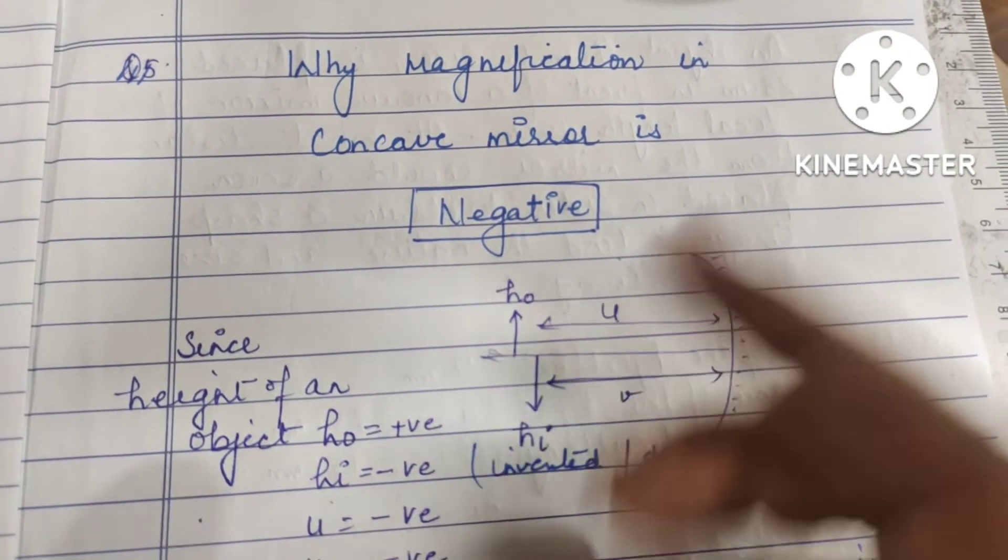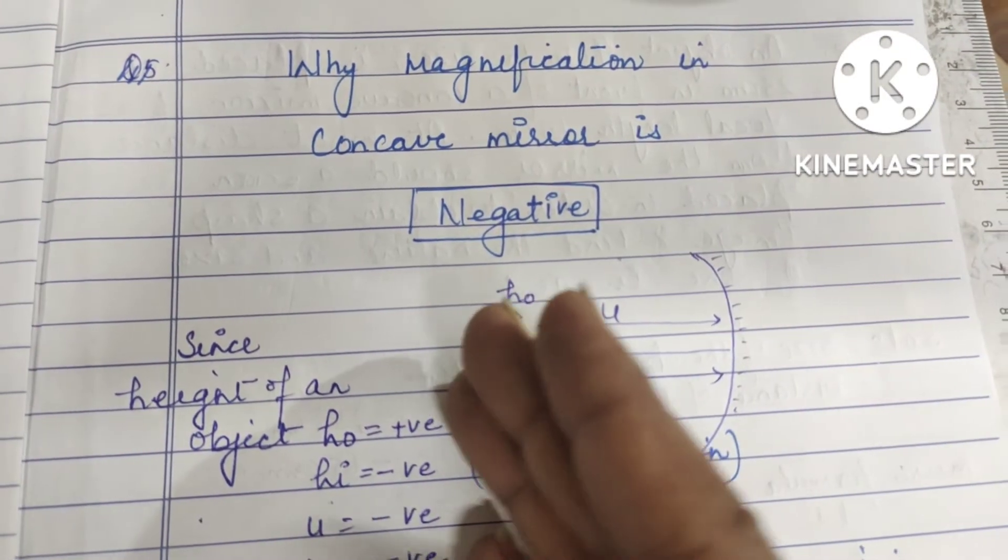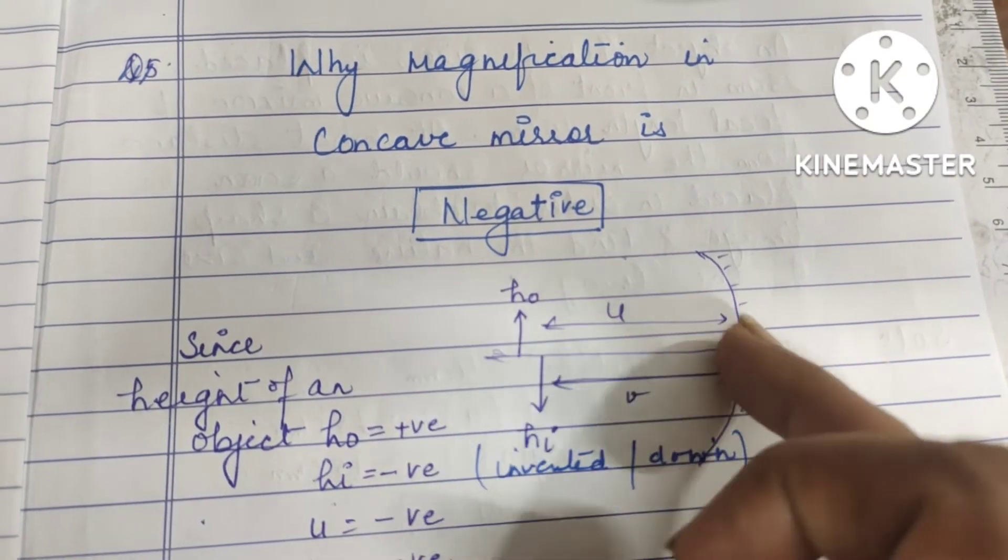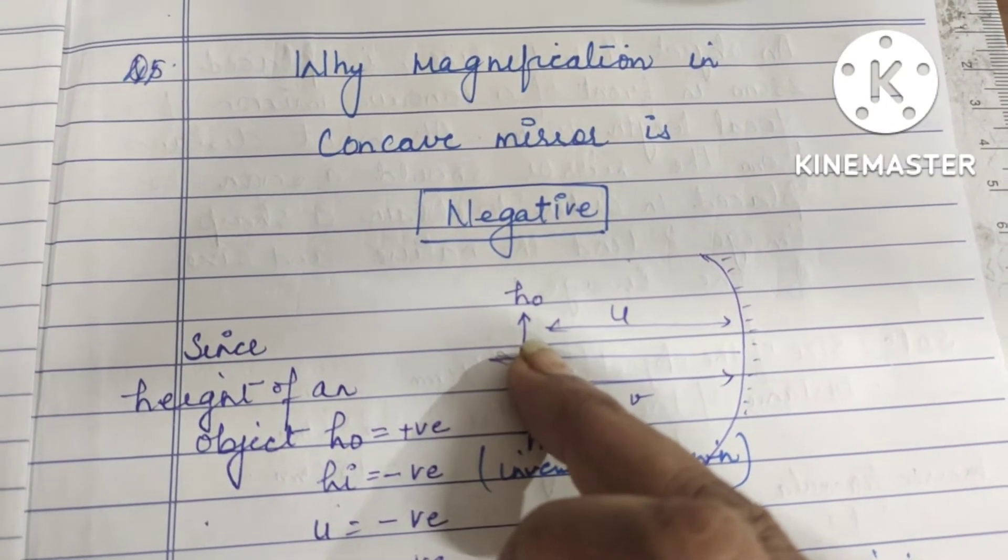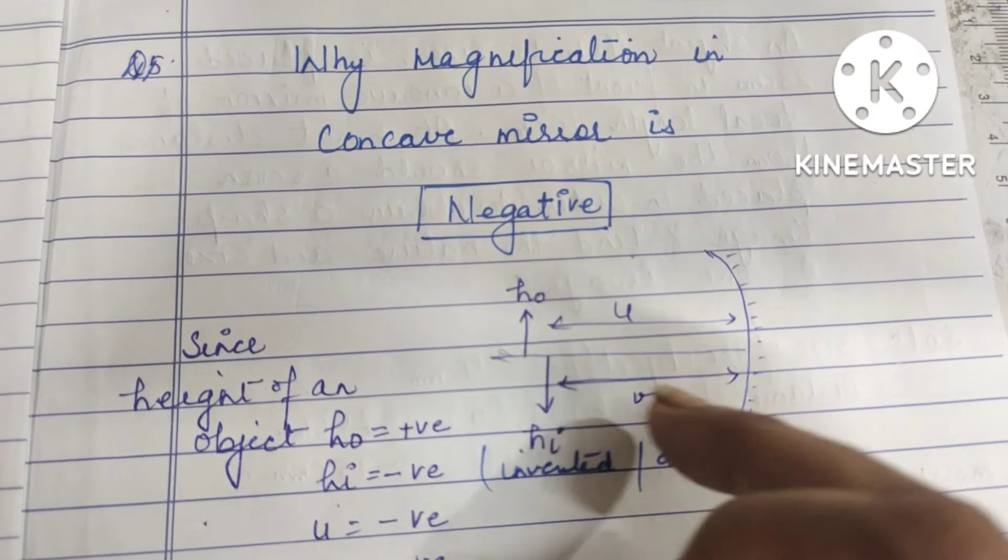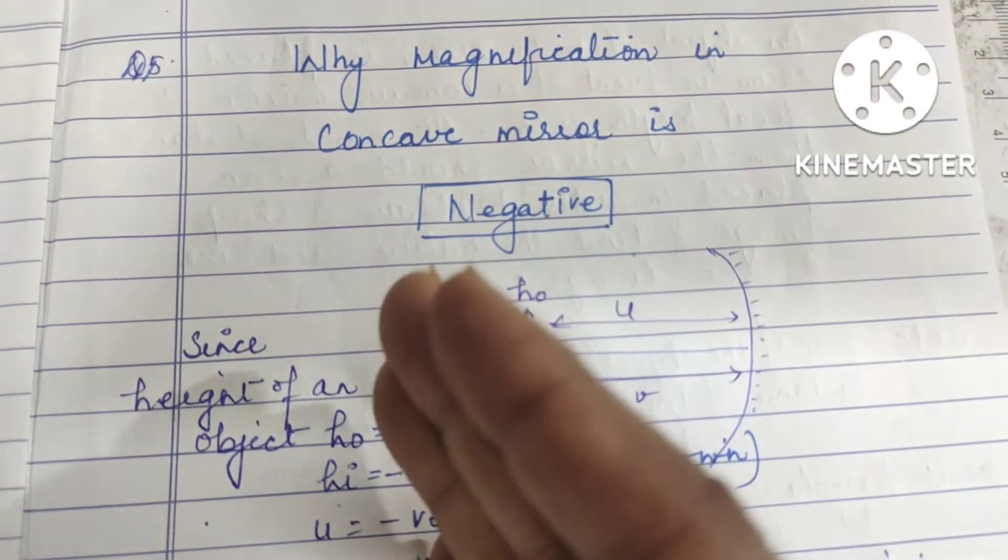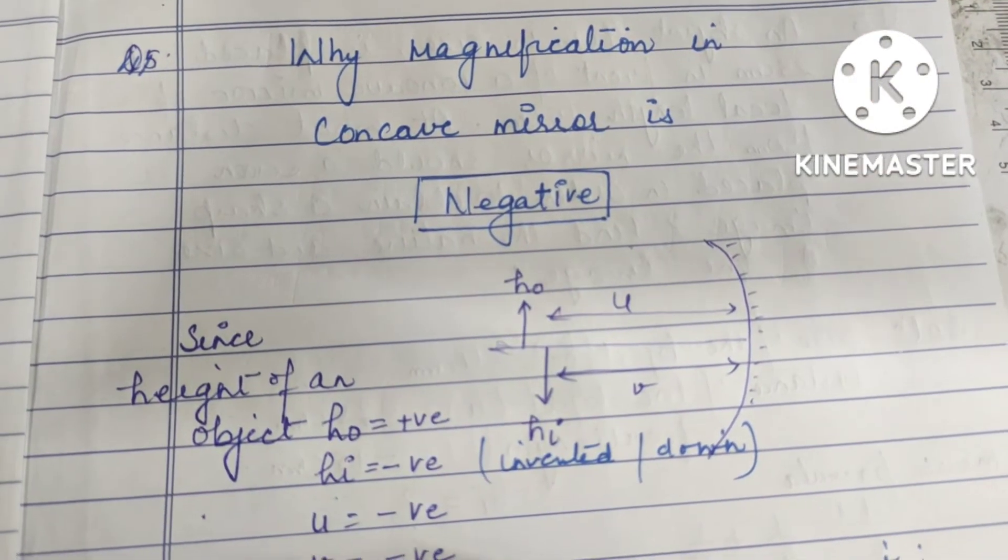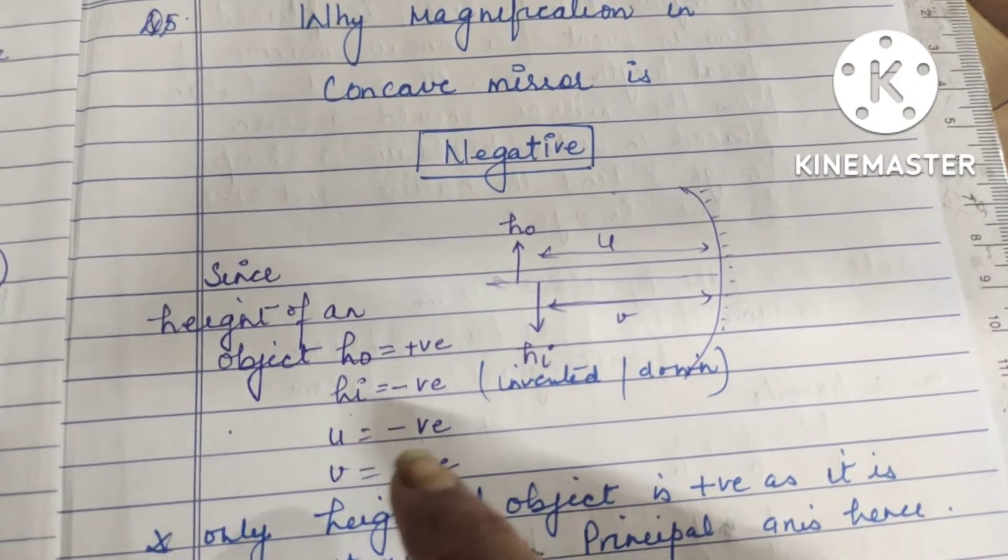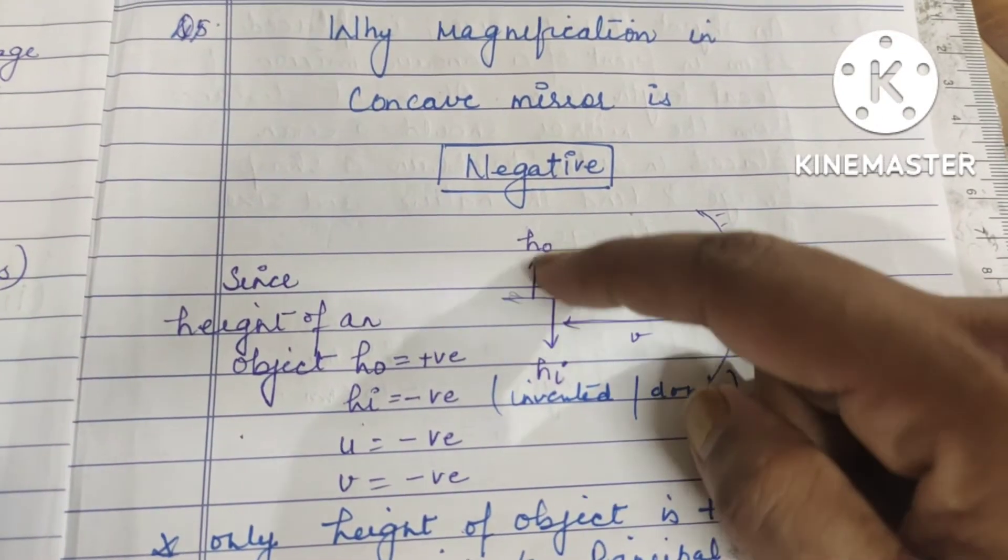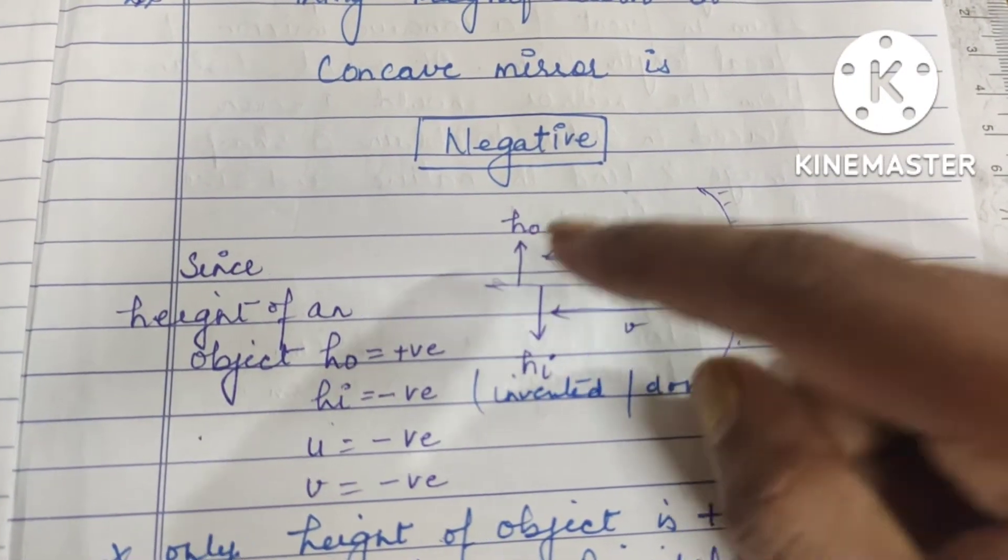So u, which is the distance of the object, is also on the left side. The image is also from the left side. So whenever things are on the left side, they are always negative. Height of the object, only the height of the object is positive, because it is standing on the principal axis.